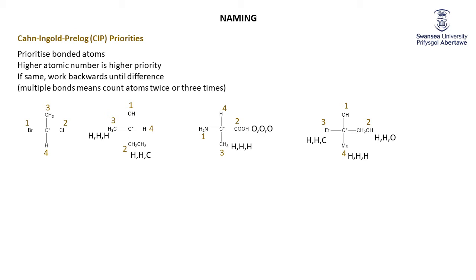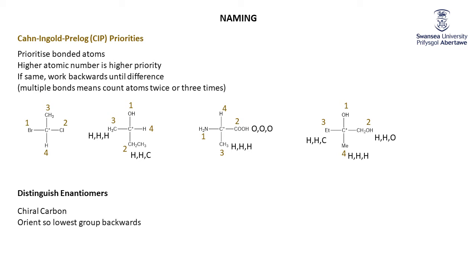The reason we assign these priorities is so we can distinguish between the different enantiomers, because the enantiomers have their groups arranged differently — otherwise they would be superimposable. The definition we use is: take the chiral carbon, orient it so the lowest-priority group is at the back, then count priorities one, two, three. If that goes clockwise, we call it the R isomer; if anticlockwise, we call it the S isomer.